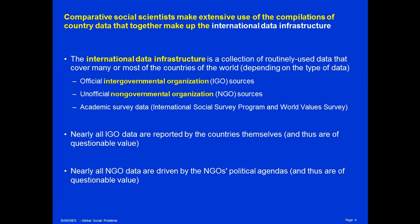Comparative social scientists make extensive use of the compilations of country data that together make up what we call the international data infrastructure. The international data infrastructure is a collection of routinely used data that cover most, many, or at least some of the countries of the world, depending on the type of data. Some kinds of data are available for nearly all countries—for example, population is reported for 190 or 200 countries—while other kinds of data are only reported for a small number of countries. For example, level of unemployment benefits would only be available in a database probably for rich countries, not for all 200 countries in the world.